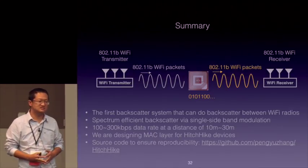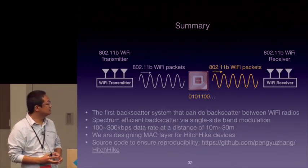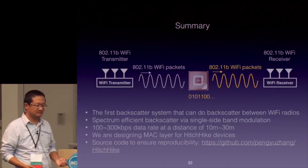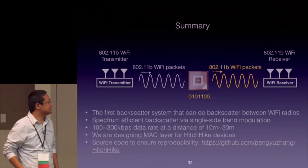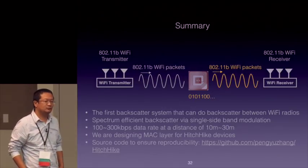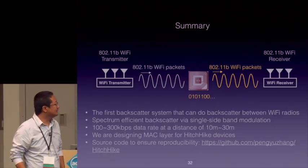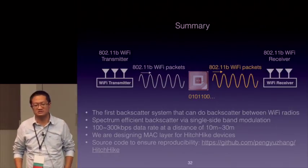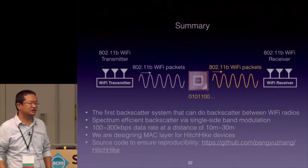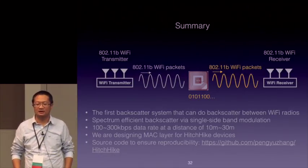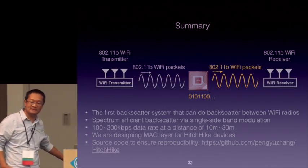In summary, I have introduced the Hitchhike system design — the first backscatter system able to perform backscatter communication between commercial Wi-Fi devices. It is a spectrum-efficient system that significantly increases the efficiency of spectrum usage for backscatter. It provides 100 to 300 kilobits per second data rate at distances of 10 to 30 meters. Our current system only works for one tag, and we are expanding to a multiple-tag scenario by designing a MAC layer protocol for Hitchhike. The code, software, and hardware are available online. Please talk to me if you are interested. Thank you — I'm happy to take questions.